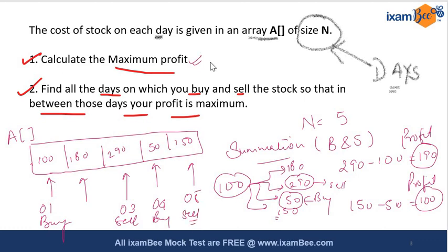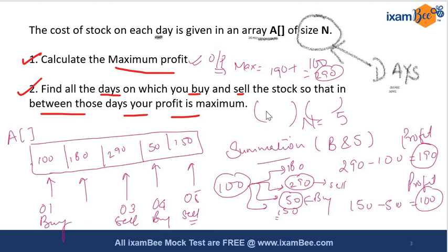Question one wants you to output the maximum profit, which is 190 plus 100 equals 290. Question two wants you to give the pairs of days for buying and selling: buying on Day 1 and selling on Day 3 gives profit 190, and buying on Day 4 and selling on Day 5 gives profit 100. So the output pairs are (1,3) and (4,5). In this video we are focusing on question one.